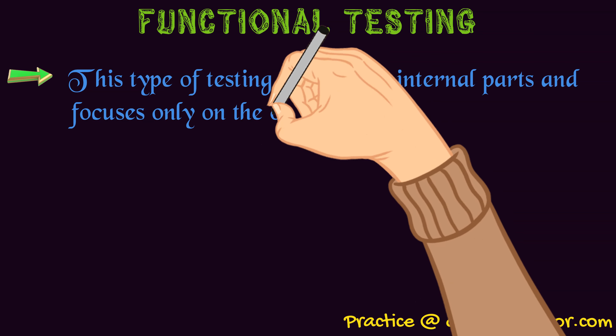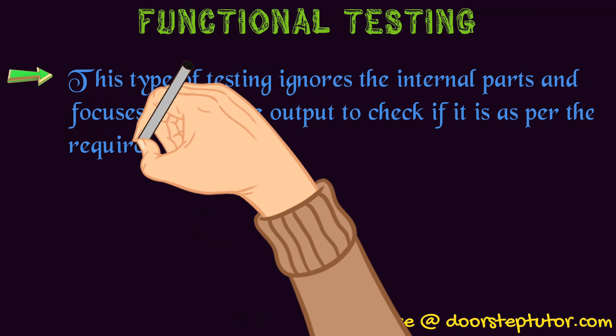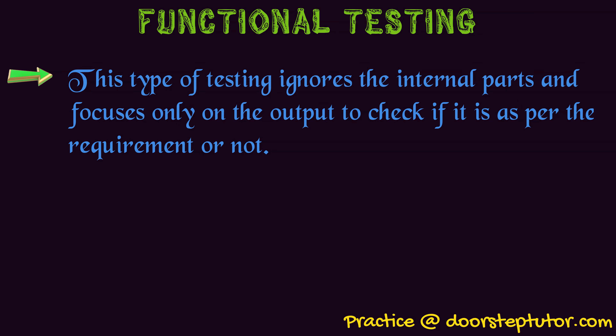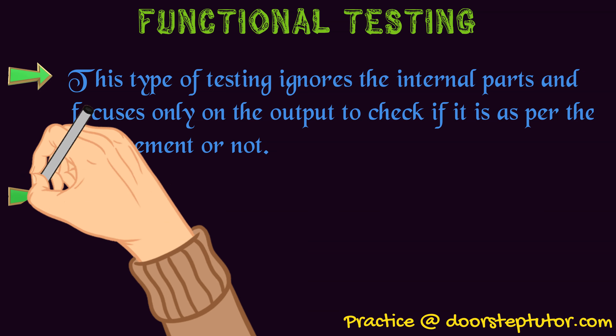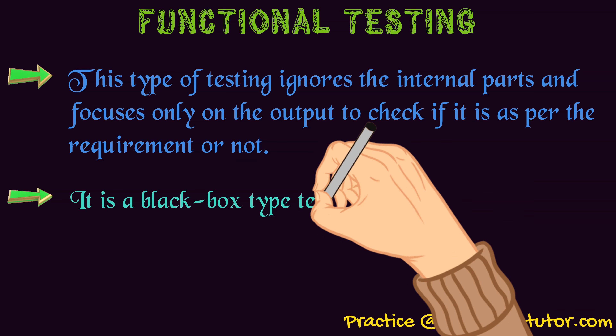Let's begin with functional testing. Functional testing means we will check only the functionality of the software. We will not consider the internal products and will focus on the output — how the software is responding to different inputs and producing output. If the product is producing output according to the user's requirement, it means it is functionally operating very well.